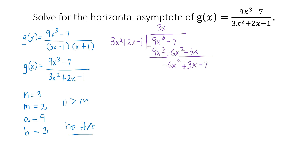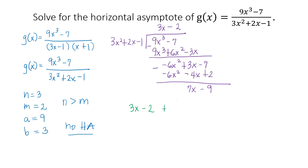−6x² divided by 3x² is −2. Multiply −2 by all terms: −2 times 3x² is −6x², −2 times 2x is −4x, and −2 times −1 is +2. Subtracting: −6x² minus itself is 0, 3x minus (−4x) is 7x, and −7 minus 2 is −9. So the quotient is 3x − 2 with remainder 7x − 9 over (3x² + 2x − 1).